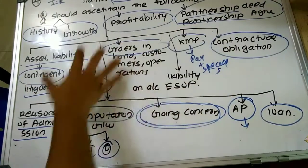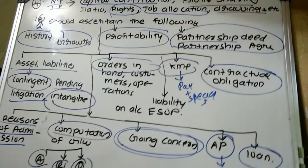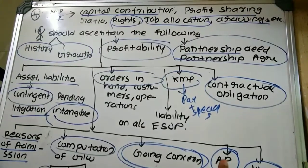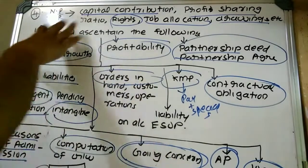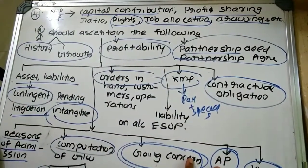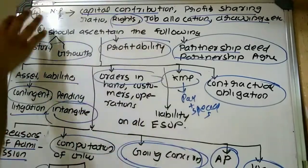These are the factors on the basis of which the investigating accountant is required to obtain information when conducting investigation on behalf of an incoming partner. Here we completed question number 4.